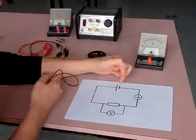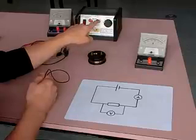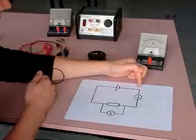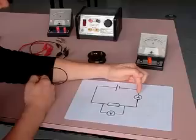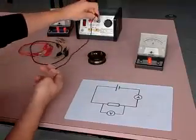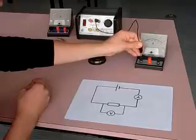So starting at the negative end of the power source here, that's where electrons come from, we move around the circuit until we get to the ammeter. So we're going to plug the negative end of the power source into the negative end of the ammeter.